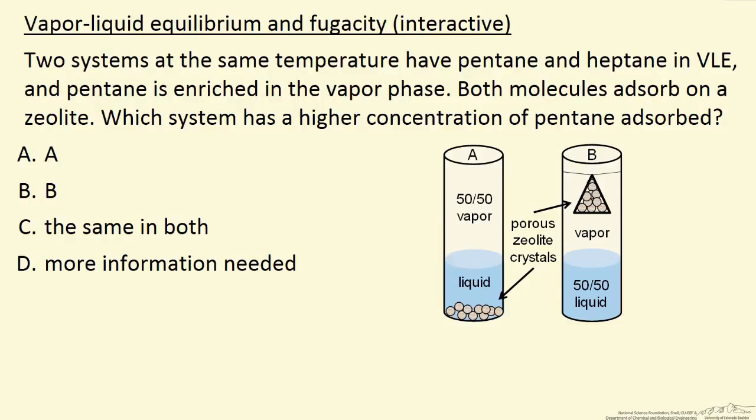In system B the liquid is 50%, and we are told that the vapor phase is going to be enriched in pentane, and this is because pentane has the higher saturation pressure. So the question is, which of these two systems will have a higher concentration of pentane?